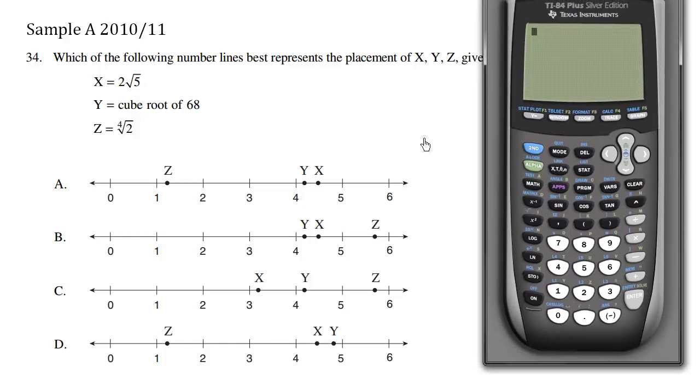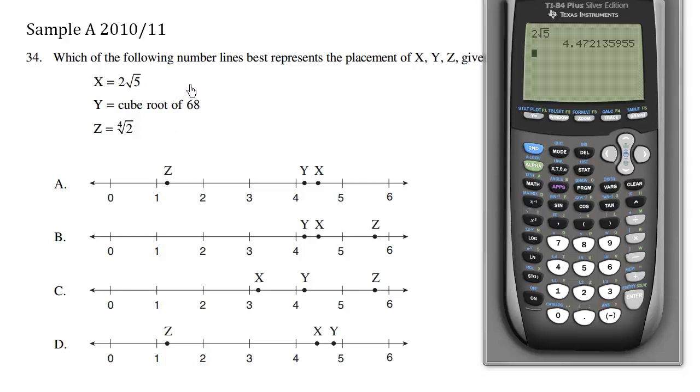We have x equals 2 root 5, so I'm going to type in 2, and then just learn how to use your calculator, second, square root symbol, 5 equals 4.472 approximately. So I'm going to type in 4.472, and that's x. And looks like choice C is incorrect because x should be up here.